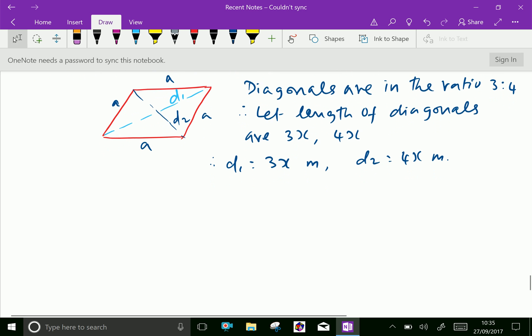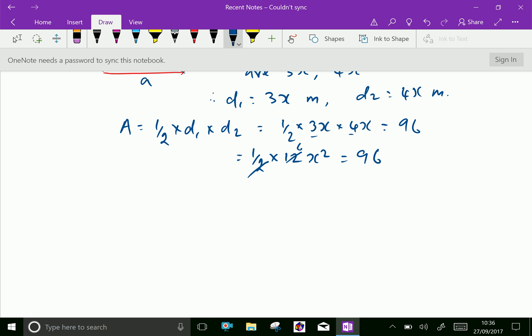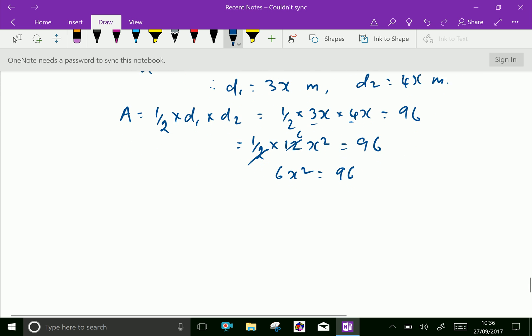We know that area of rhombus equals half into diagonal 1 into diagonal 2, which equals half into 3x into 4x. But the area is given as 96 meter squared. So half into 12x squared equals 96. 6x squared equals 96. x squared equals 96 over 6, equals 16.